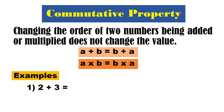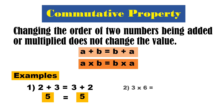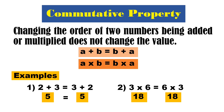Examples: we have positive 2 plus positive 3. Pagpalitin natin — positive 3 plus positive 2. 2 plus 3 is 5, and 3 plus 2 is 5. Equal! So changing the order of two numbers being added does not change the value. Next: we have 3 times 6, pagpalitin natin — 6 times 3. 3 times 6 is 18, and 6 times 3 is also 18. So they are equal — changing the order of two numbers being multiplied does not change the value.